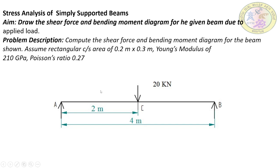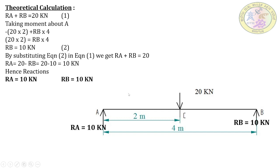Let us move to the theoretical calculation. Before drawing the shear force and bending moment diagram, we must calculate the reaction loads supported by the two reactions Ra and Rb. The total load acting on the beam is 20 kilonewton, so Ra plus Rb equals 20 kilonewton.